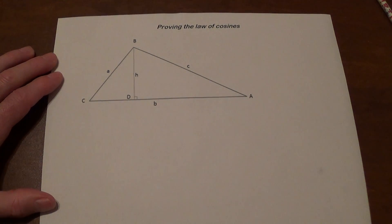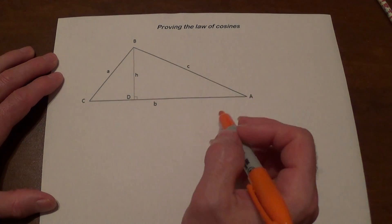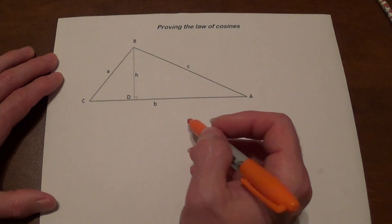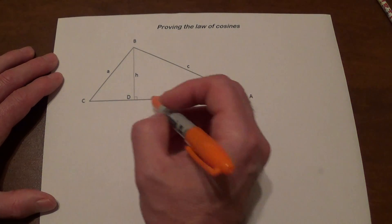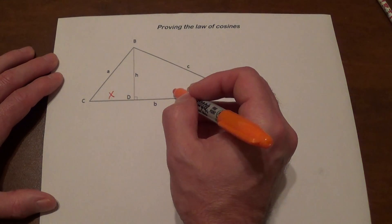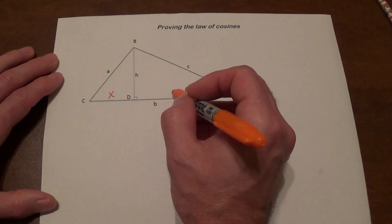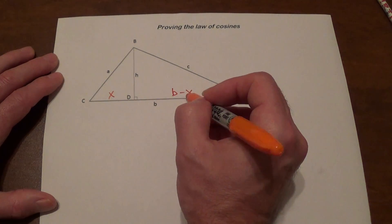When we're proving the law of cosines, we're going to take a new triangle, in this case I have this one, and we're going to draw a height and see how we can express all the different things. So I'm going to call this side x and since this whole side is b, the length of this will be b minus x.